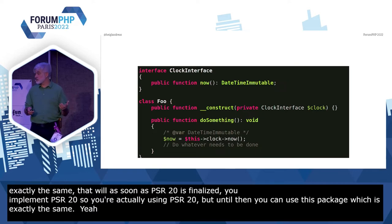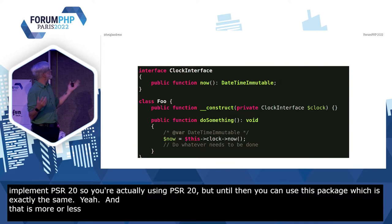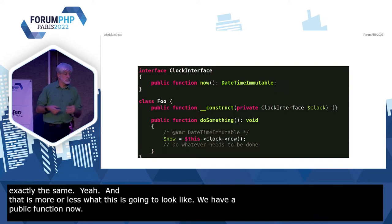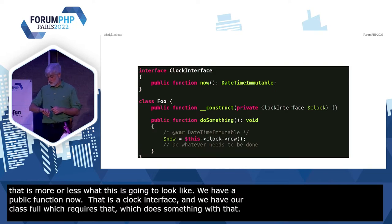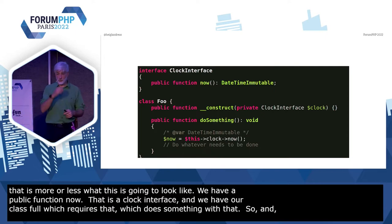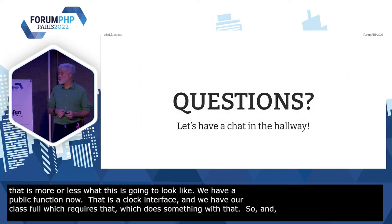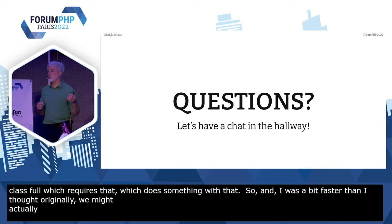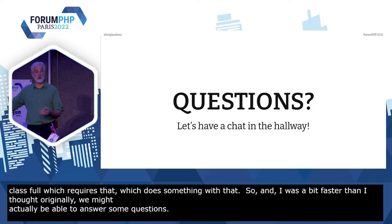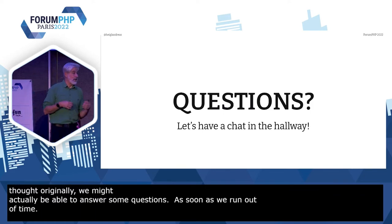And that is more or less what this is going to look like. We have a `public function now` — that's the clock interface — and we have our class Foo, which requires that and does something with that. As I was a bit faster than I thought originally, we might actually be able to answer some questions. As soon as we run out of time, we move that out into the hallway. Are there any questions?